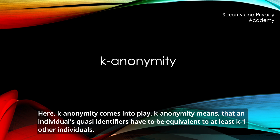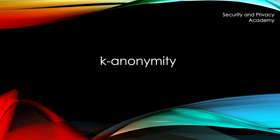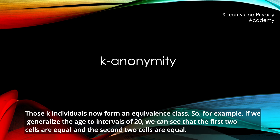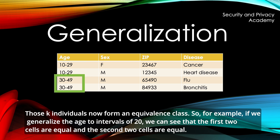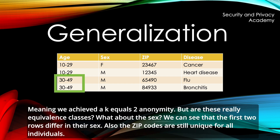Here k-anonymity comes into play. K-anonymity means that an individual's quasi-identifiers have to be equivalent to at least k-1 other individuals. Those k-individuals now form an equivalence class. So, for example, if we generalize the age to intervals of 20, we can see that the first two cells are equal and the second two cells are equal, meaning we achieved a k equals 2 anonymity.